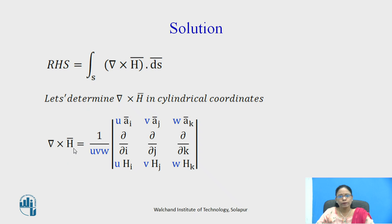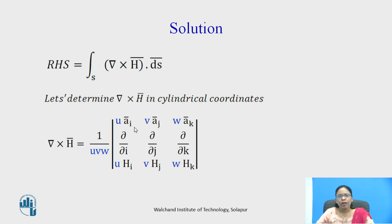Curl h-bar in generalized coordinates can be written as a determinant with unit vectors u·a_i, v·a_j, w·a_k; partial derivatives ∂/∂i, ∂/∂j, ∂/∂k; and components u·h_i, v·h_j, w·h_k. Here h_i, h_j, h_k are the components along the respective unit vectors, and u, v, w are the scale factors (multipliers) while i, j, k are the coordinates. In different coordinate systems, curl h-bar gives different results based on the multipliers and coordinates used.